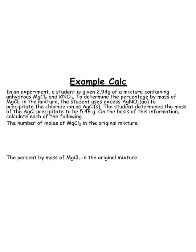Here is a sample problem. In the sample problem, a student is given 2.49 grams of a mixture containing anhydrous magnesium chloride and potassium nitrate. They want to determine the percentage by mass of the magnesium chloride in the mixture. The student adds AgNO2, so silver nitrite, to precipitate out the chloride ion.